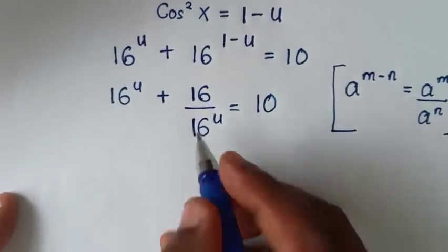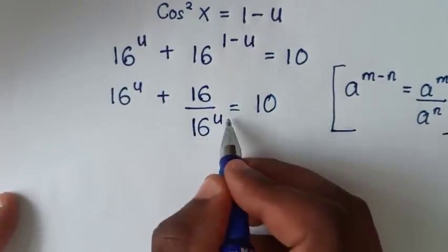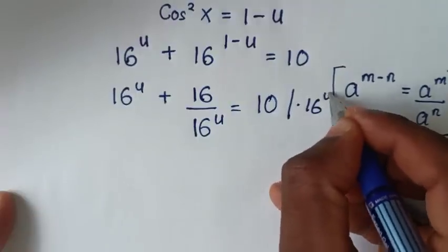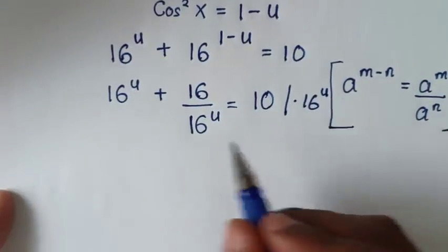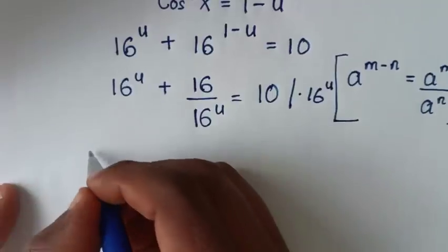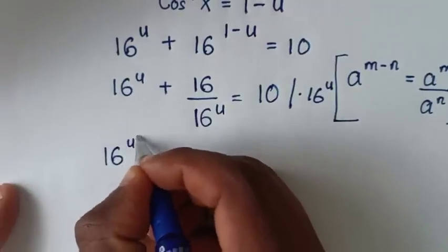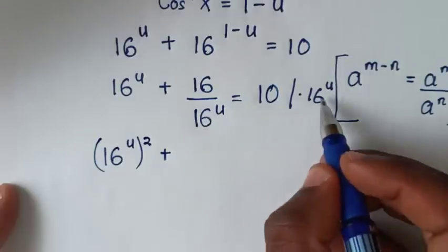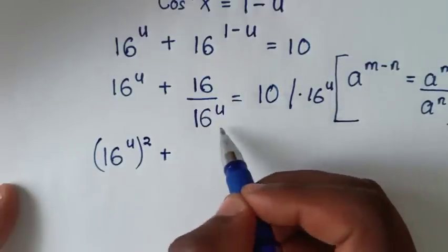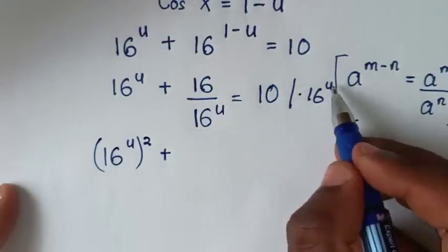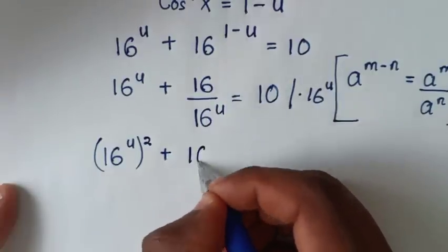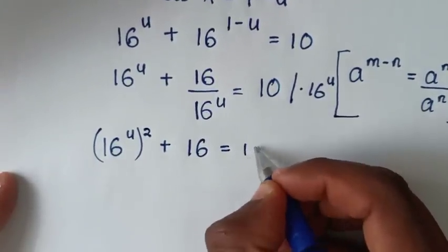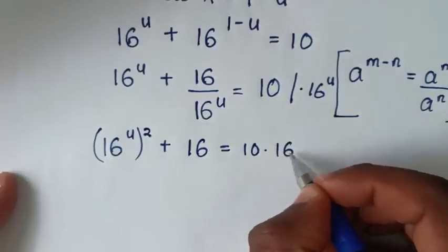In the next step, we'll remove the denominator of 16 power of u by multiplying the whole equation by 16 power of u. So it will be 16 power of u times 16 power of u, which is (16^u)², then plus 16 power of u times 16 over 16 power of u — this and this will cancel — so it will be plus 16, equal to 10 times 16 power of u.